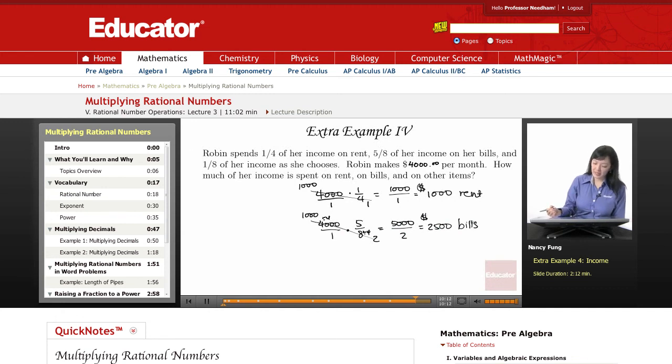Lastly, she gets to spend one-eighth as she chooses. So let's take 4,000 over 1 and multiply by one-eighth. Let's cross-simplify again to make our numbers smaller and easier to work with.